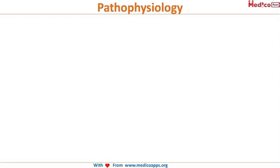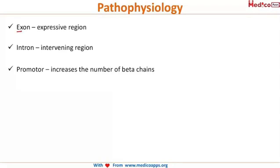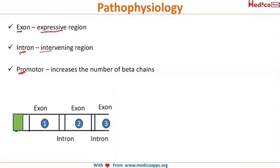Now let us discuss the pathophysiology associated with this condition. A normal gene consists of 3 regions: the exon, which is the expressive region; the intron, which is the intervening region; and the promoter region, which increases the number of beta chains. As seen on screen, the green colored structure is the promoter region, the numbered structures are the exons, and in between the exons the introns are present.